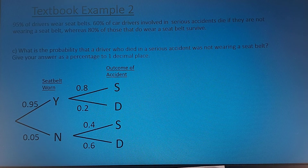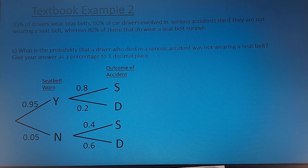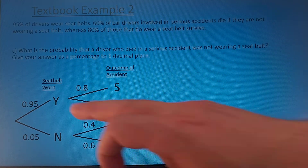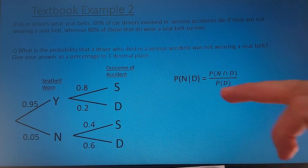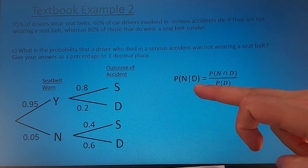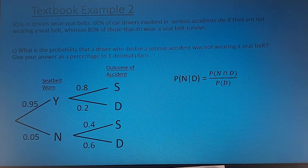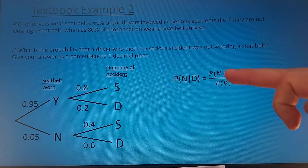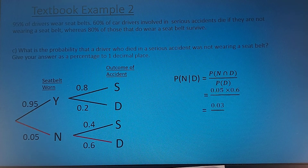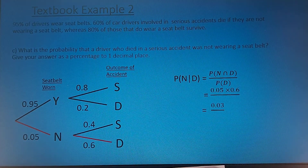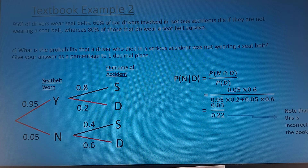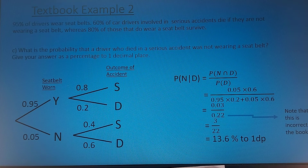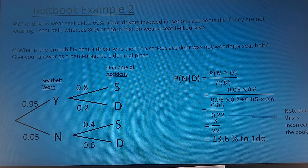Part C: what's the probability that a driver who died in a serious accident was not wearing a seatbelt? There's conditioning here with the phrase 'who died' — we're looking at all drivers who died and within that, what's the probability they weren't wearing a seatbelt. Using the formula: probability of not wearing a seatbelt given died equals the intersection divided by the probability that they died. This simplifies to 3 out of 22, or 13.6% to one decimal place.